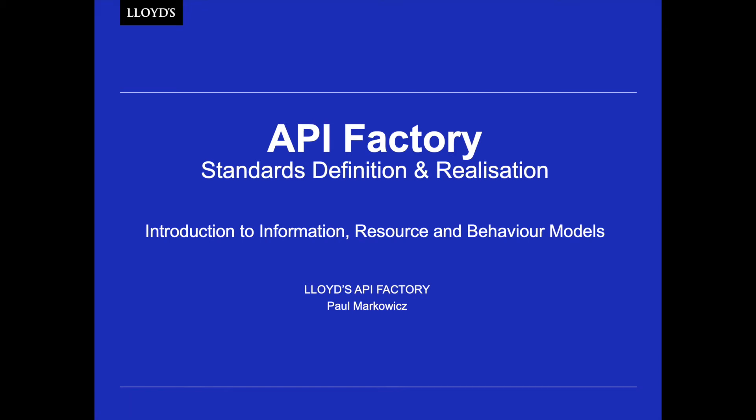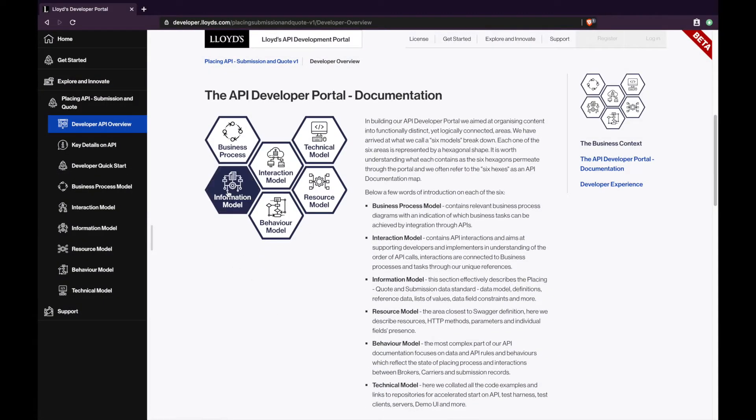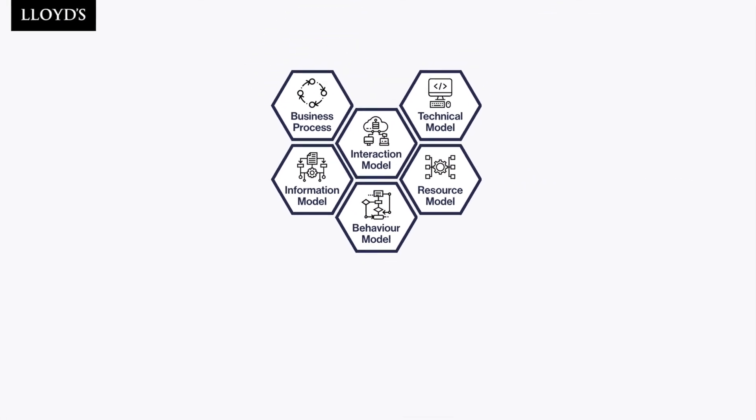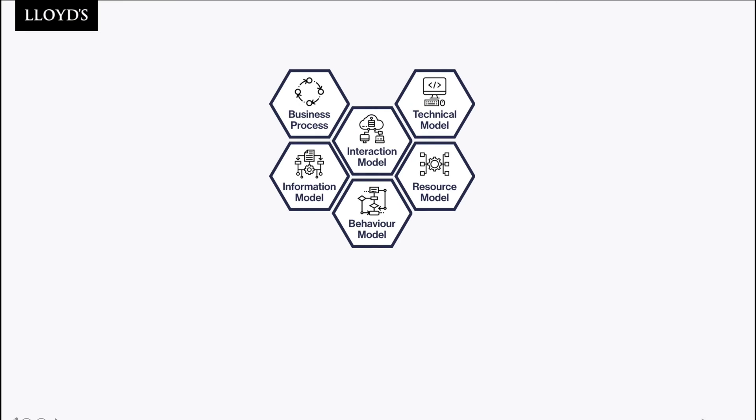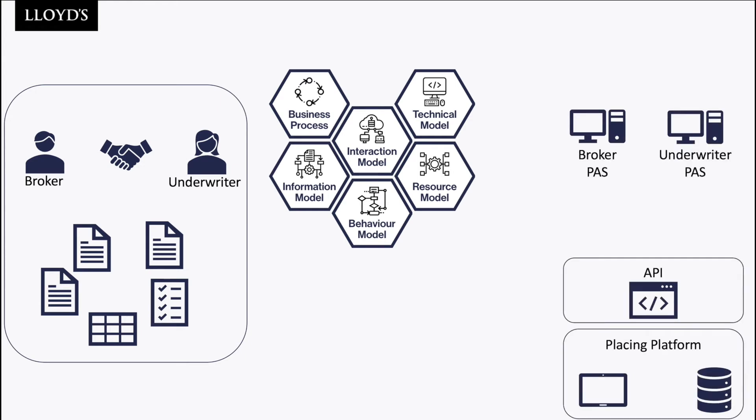Hello, my name is Paul Markovitch and in this video I will introduce you to three models: information, resource, and behavior model. I will aim to introduce those three particular models both in the context of business here on the left hand side, as well as the context of API and systems here on the right hand side.